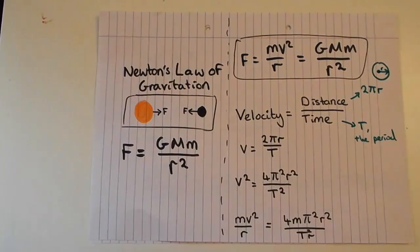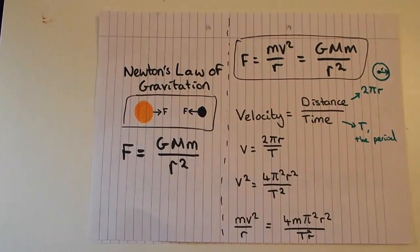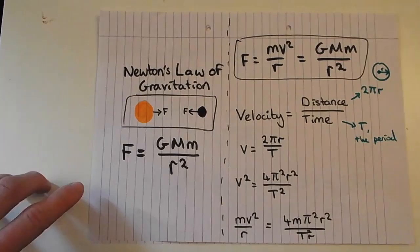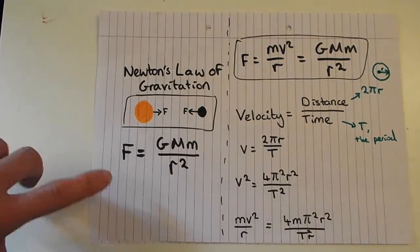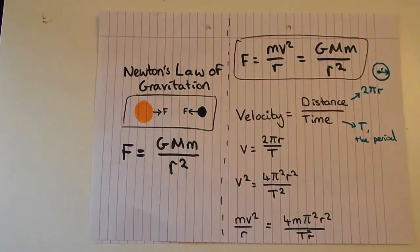Another way to represent the centripetal force between the two objects is Newton's law of gravitation: the magnitude of the force between two objects of mass M and m is GMm/r². Big G is a gravitational constant — a conversion factor, similar to Stefan's constant — that converts the expression into units of force. We now set the centripetal force equal to the gravitational force: mv²/r = GMm/r².